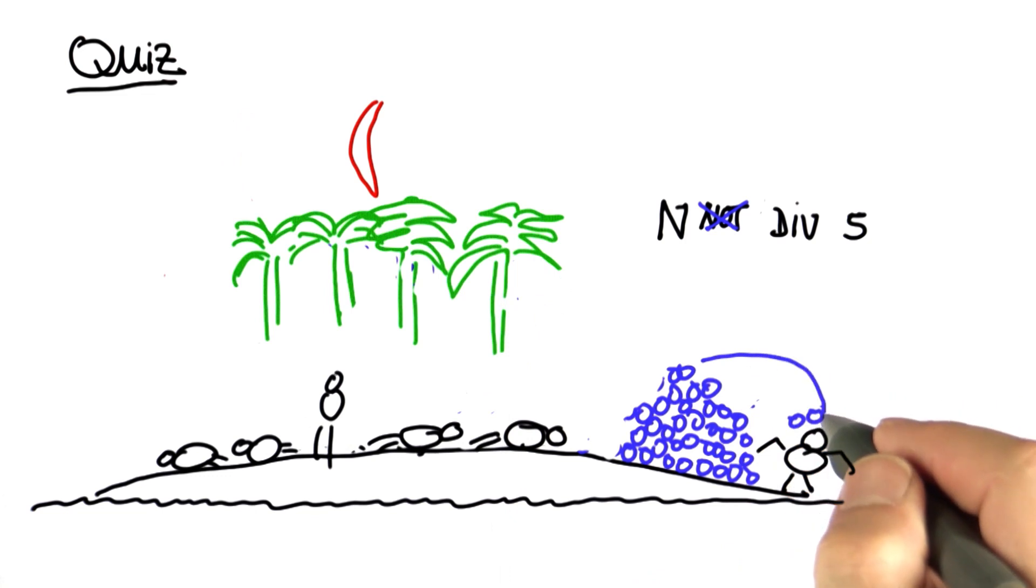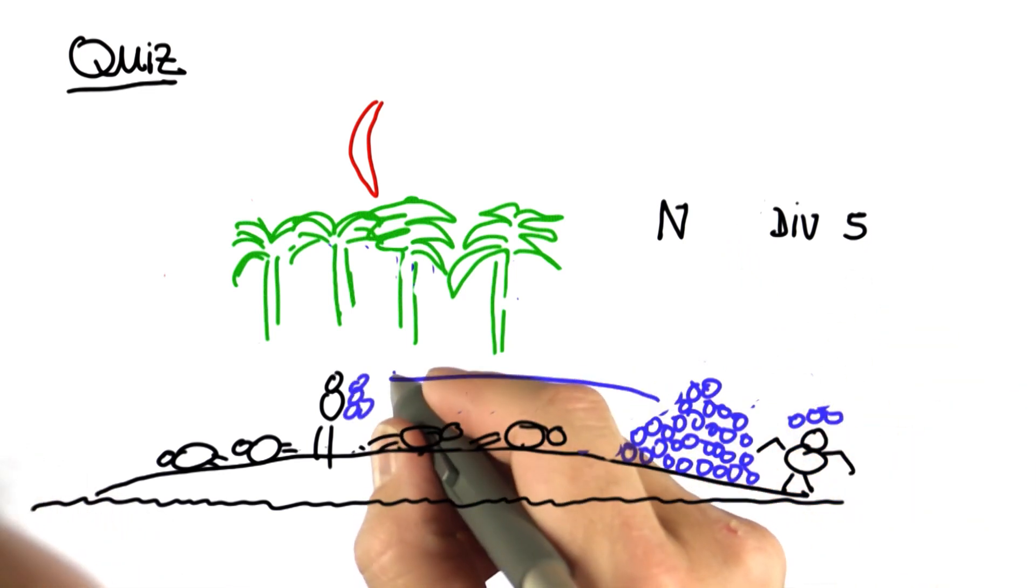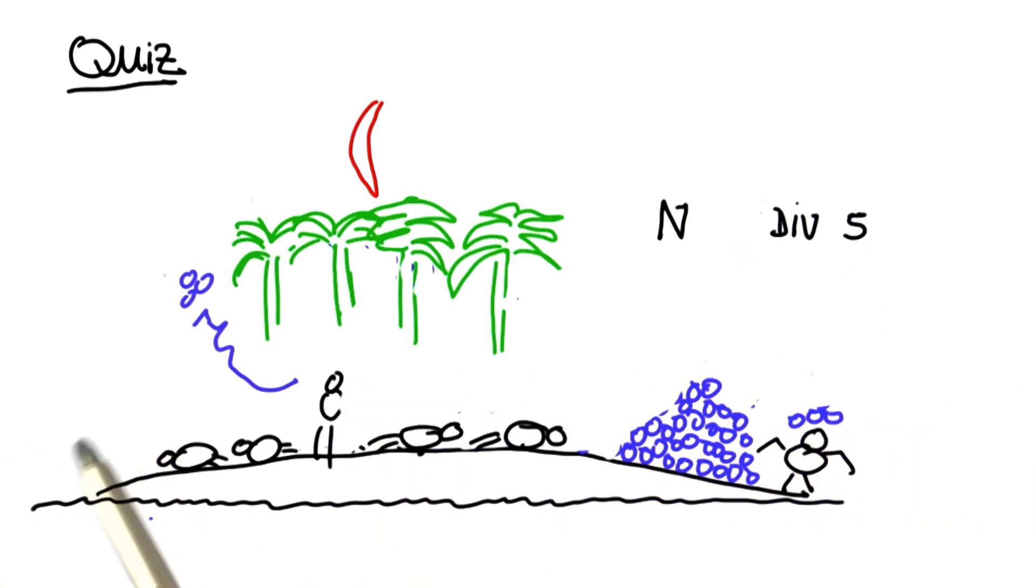The next guy wakes up. He gives one coconut to the monkey which makes the remainder divisible by five. He takes his fifth and hides it in a safe place before he falls asleep. The monkey now holds three coconuts.